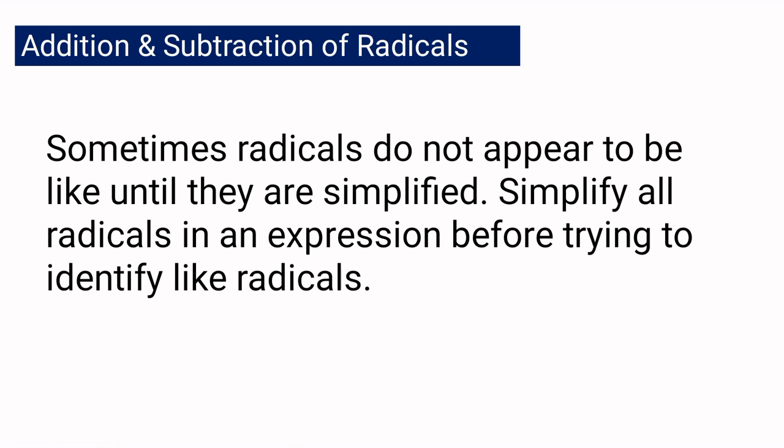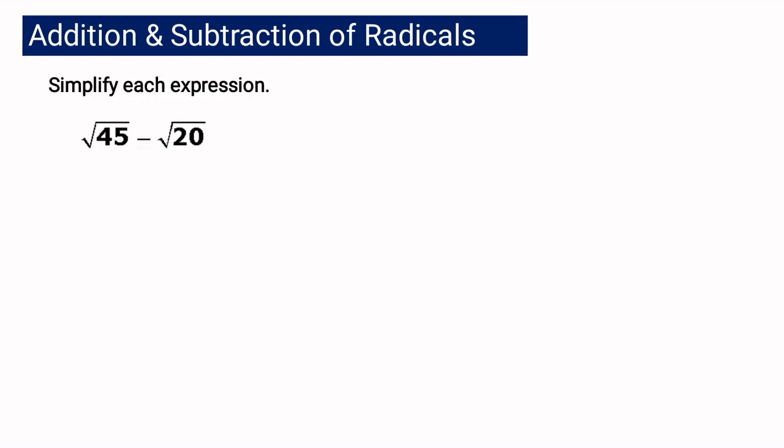But sometimes radicals do not appear to be like until they are simplified. So you have to simplify all the radicals first in an expression before trying to identify whether they are like or unlike radicals. Given this expression — square root of 45 minus square root of 20 — if you look at it at a glance, we might say that they are unlike radicals and therefore cannot be combined. But notice that square root of 45 and square root of 20 are not yet in their simplest form.